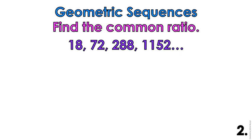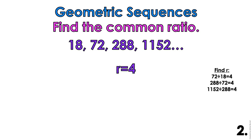Example 2: I have 18, 72, 288, 1152. I'm going to take 72 divided by 18, 288 divided by 72, and 1152 divided by 288, and I get 4 for each of those. That is a common ratio, so r equals 4.